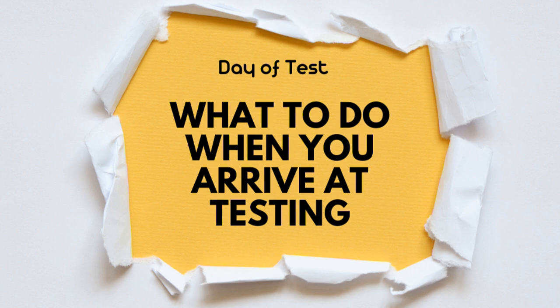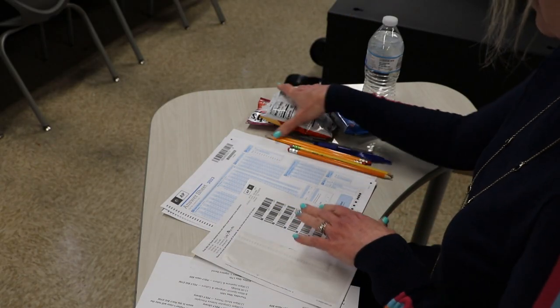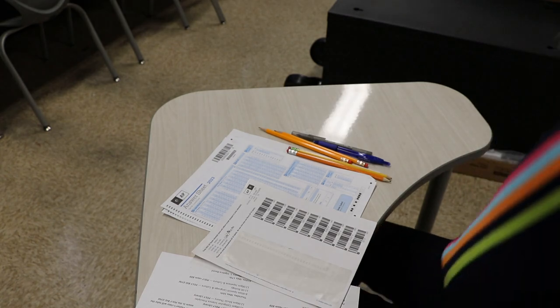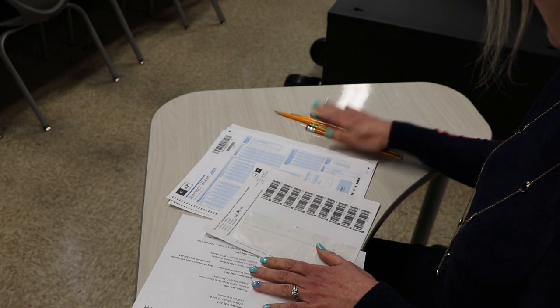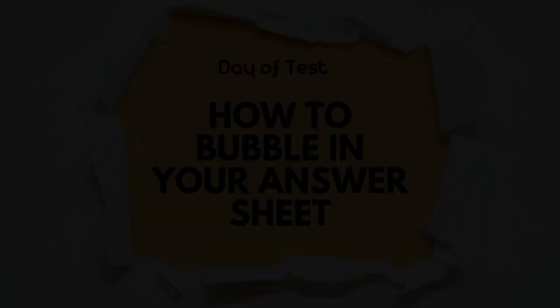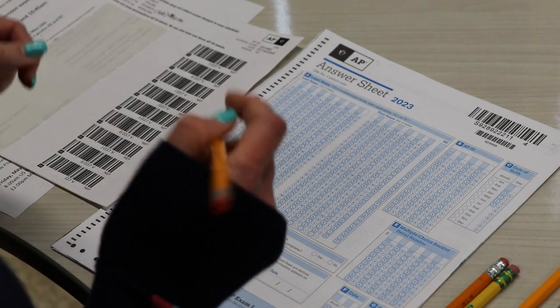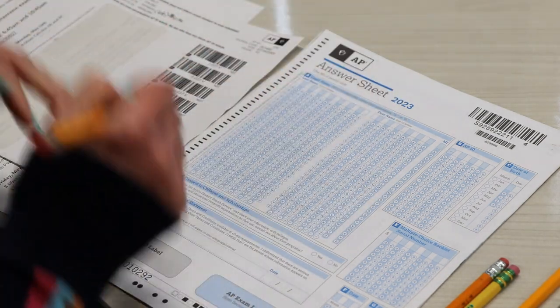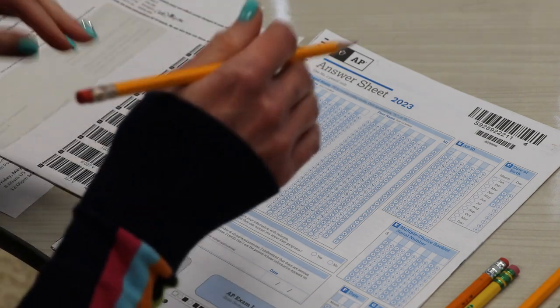Now we're going to talk about bubbling in those bubble sheets as soon as you've checked in and arrived. Once you sit down, take all of your snacks — they can be in a clear Ziploc bag with your water — and put those under your desk. Then get started with just your pencils, your two pens, and a calculator if allowed. As soon as you sit down, you're not going to talk to your friends. You're going to check in, sit down, and start bubbling immediately — you don't need to wait for instructions.